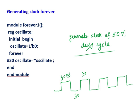This is another example - a module called oscillate. Inside the initial block, we initialize the oscillate signal to zero, so the first value will be zero. This zero will be for 30 nanoseconds, then it will oscillate - it will become one, and remain there for 30 nanoseconds. So this forever gives you a clock signal which runs forever.